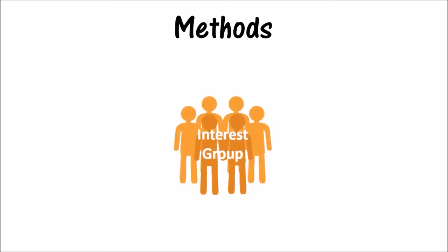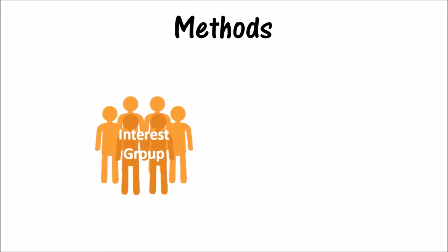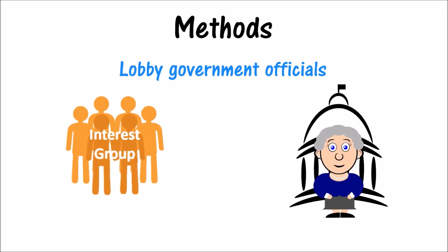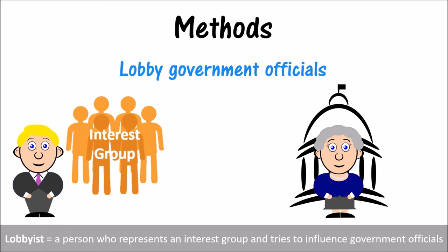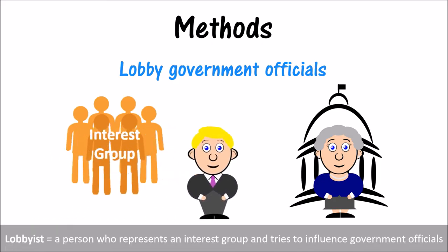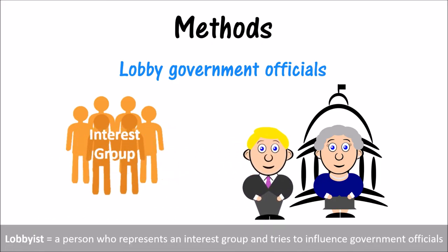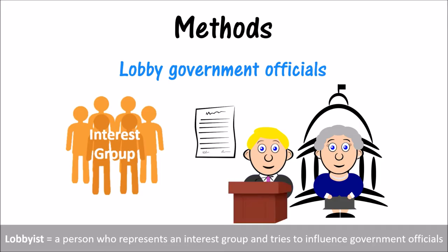Let's examine some key methods interest groups use to advance their cause. First, they lobby politicians and government officials, meaning they try to persuade leaders to support their special interest. This may mean a lobbyist for a special interest group meets with government officials, presents information, and even testifies at hearings.